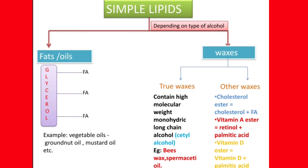The example for fats is triacylglycerol. Tri means three, acyl means fatty acids, and three fatty acids are linked to glycerol — it is called triacylglycerol. These fatty acids are linked to glycerol by ester linkage. Examples of oils which contain triacylglycerol are vegetable oils like groundnut oil, mustard oil, and sunflower oil. So all these oils contain triacylglycerol, which is a simple lipid.